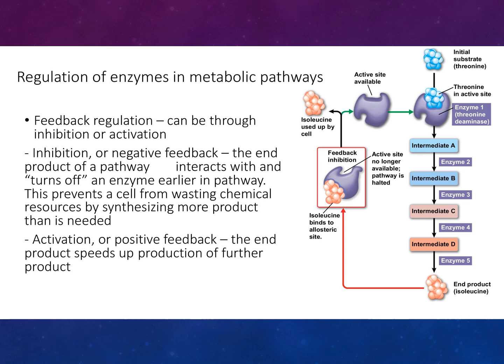Feedback regulation can be through inhibition or activation. Inhibition, or negative feedback, is where the end product of a pathway interacts with and turns off an enzyme earlier in the pathway — this prevents the cell from wasting chemical resources by synthesizing more product than is needed. Activation, or positive feedback, is where the end product speeds up production of further product.